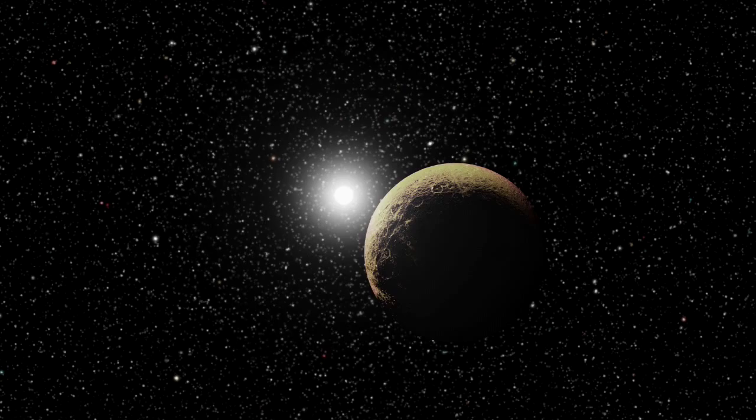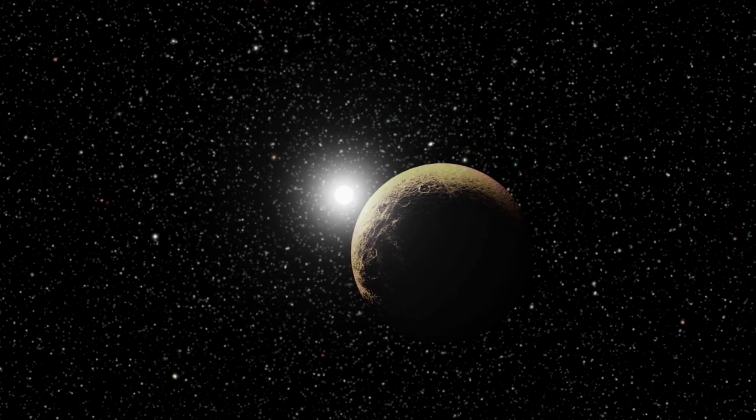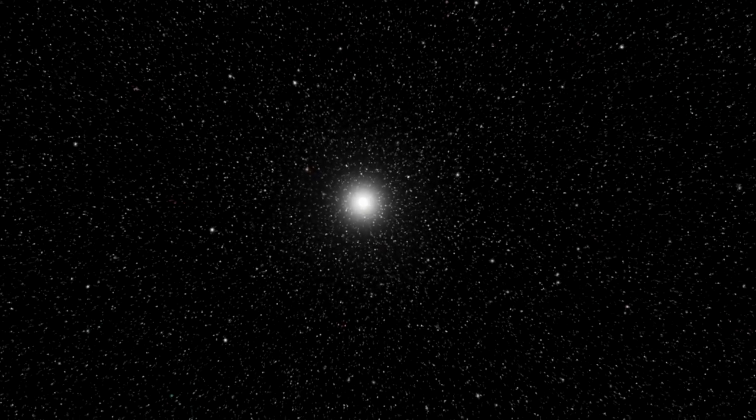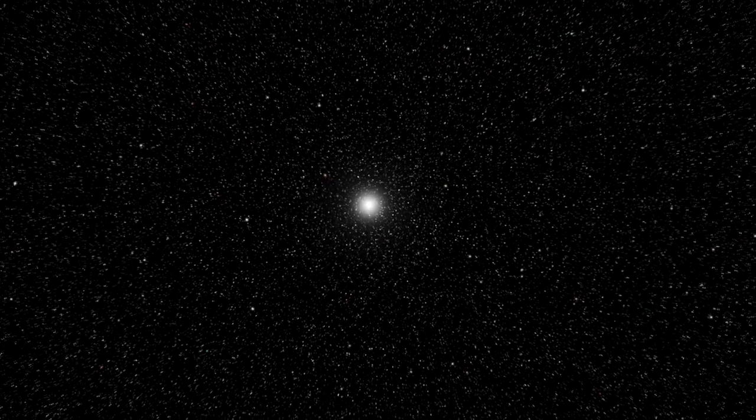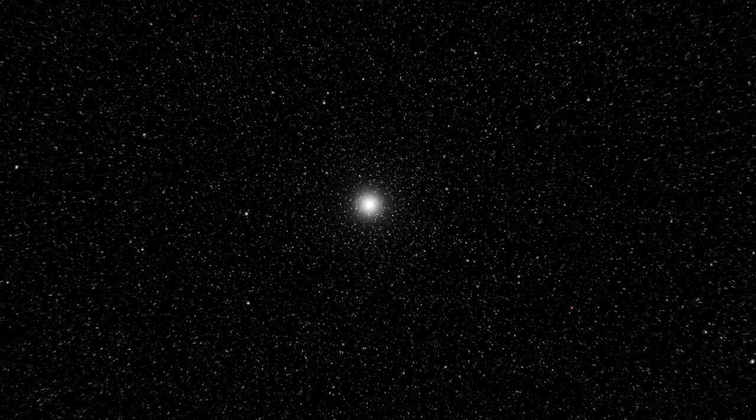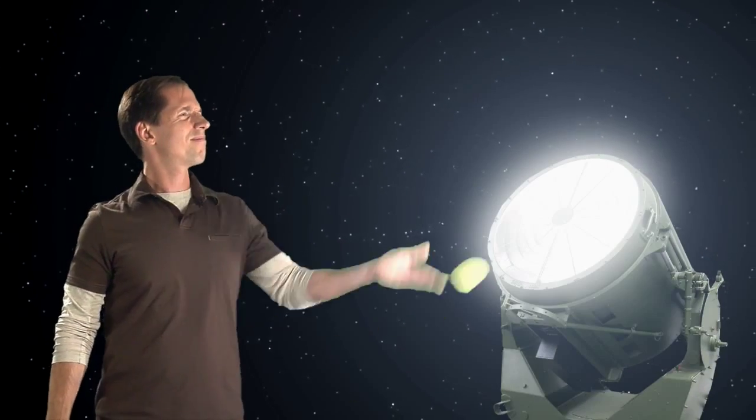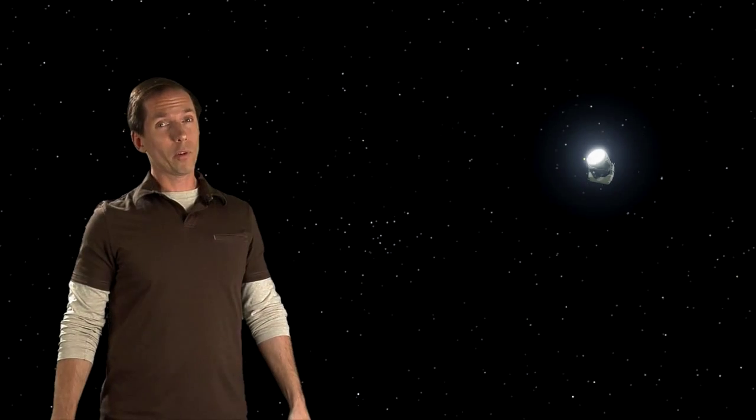So how can we gather weather reports from worlds we can't even see directly? They are so far away, their faint glow is completely blurred together with the much brighter light of their host stars. It's like trying to study a tennis ball that's next to a searchlight, a hundred miles away, using binoculars.